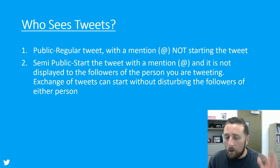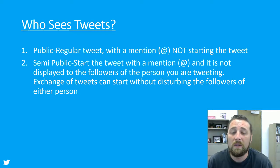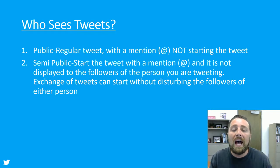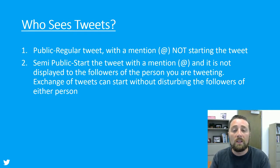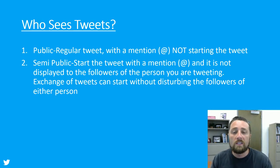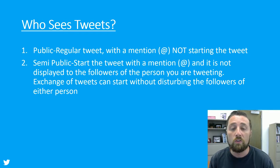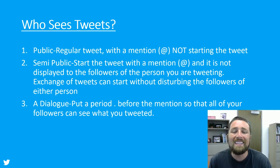The second is a semi-public tweet. It's still public, but you start the tweet with a mention. This means the exchange happens without disturbing either person's followers — if I tweet to a family member starting with their handle, only me and that person see it by default. Their followers and my followers won't have it appear in their feed, though it's still viewable if searched. That's where you see Twitter exchanges when people say 'they were fighting on Twitter.'